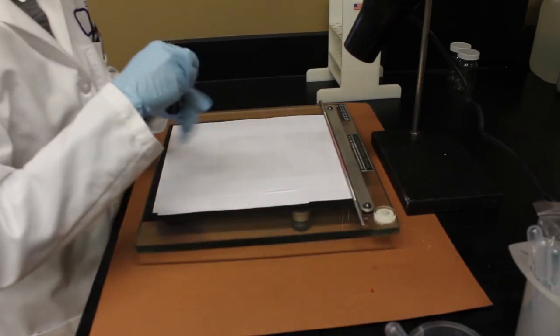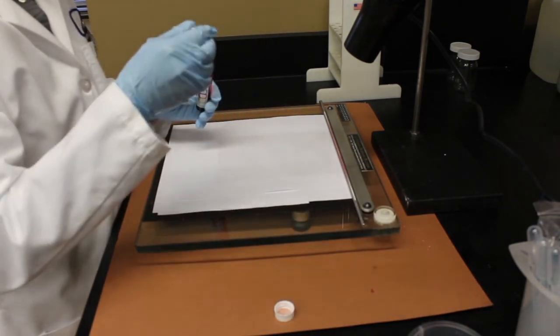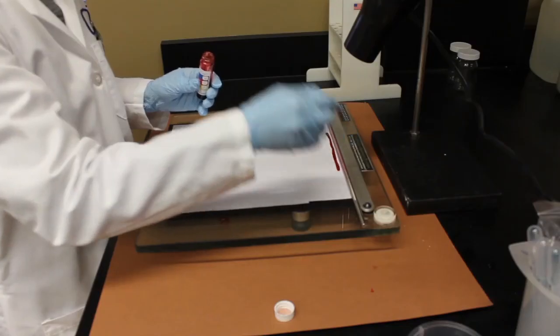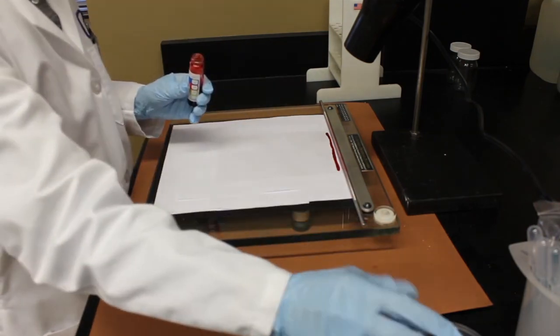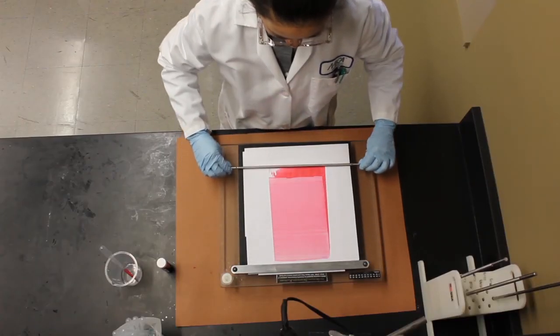To get started, clip the primed film sample and paper to the drawdown platform and place the drawdown rod at the top. Drop some of the ES&B solution onto the top of the sample using an eye dropper. Use the drawdown rod to draw down the ES&B.